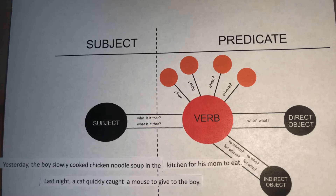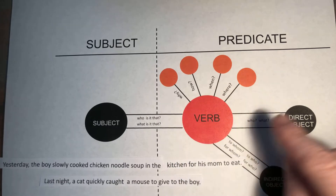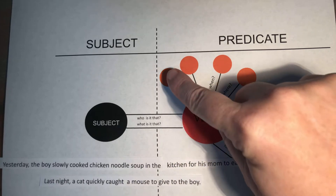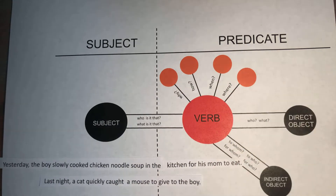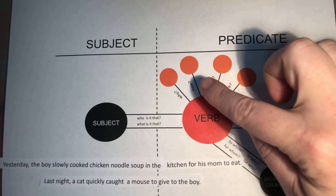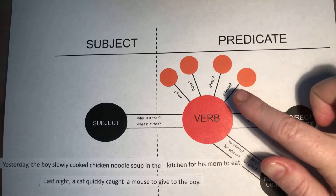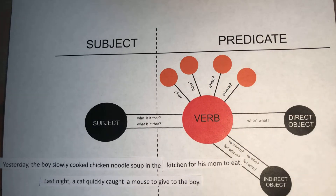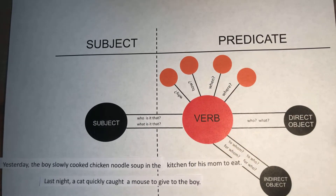Now you might have noticed that on our verb we have these four orange circles in front of it now. We are going to be looking for the why, the how, the when, and the where that relates to our verb.